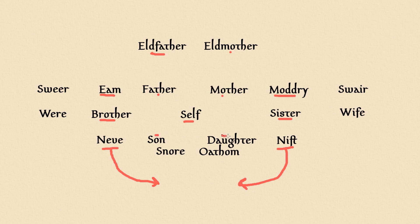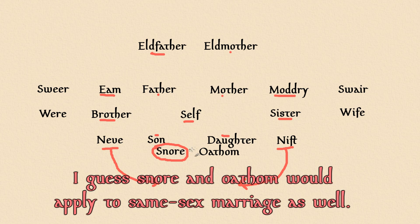There are sons and daughters. If your son marries a woman, then she is your snore. And if your daughter marries a man, he is your othom.